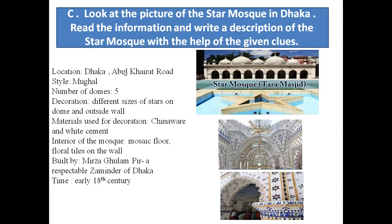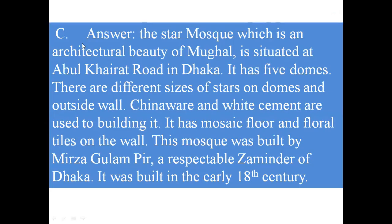Using these clues, you have to write a description of the Star Mosque. Here is a sample description: 'The Star Mosque, which is an architectural beauty of Mughal style, is situated on Abdul Khairat Road in Dhaka. It has five domes. There are different sizes of stars on the domes and outside wall. China ware and white cement are used to decorate it. It has a mosaic floor and floral tiles on the wall. This mosque was built by Mirza Ghulam Pir, a respectable zamindar of Dhaka, in the early 18th century.'